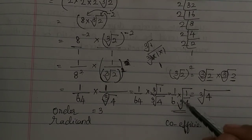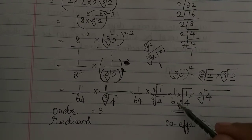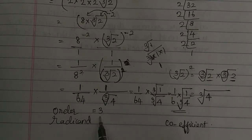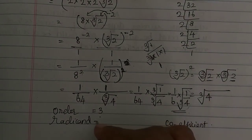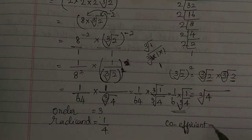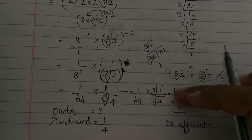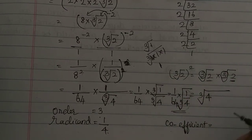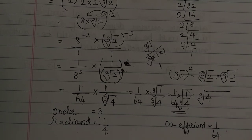So the final answer is 1 by 64 × cube root of 1 by 4. The order is 3, the radicand is 1 by 4, and the coefficient is 1 by 64. That is the simplest form.